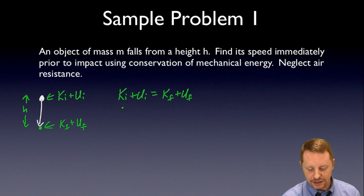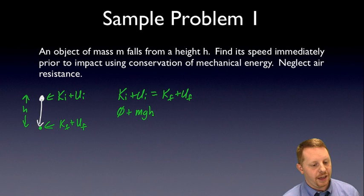The initial kinetic energy, if it's dropped from rest, is zero plus its initial potential energy, mgh, the height at which it was raised to, must equal the final kinetic energy, ½mv², plus the final potential energy. And we're going to set that ground level right before it hits over here as our zero point of potential energy.